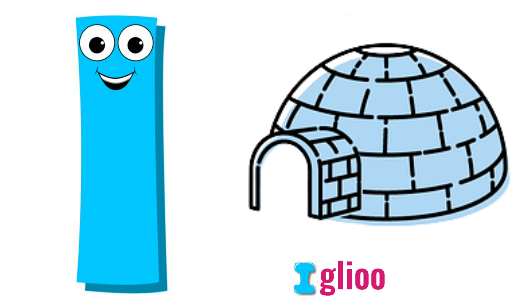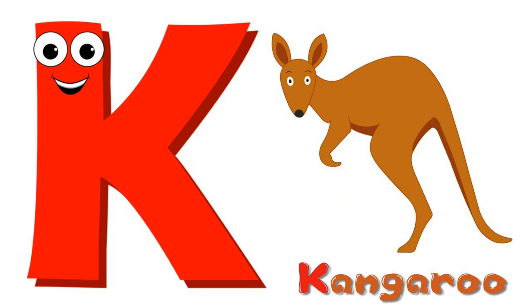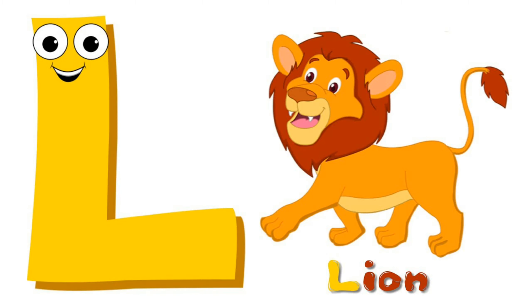I is for igloo, i-i-igloo. J is for jump, j-j-jump. K is for kangaroo, k-k-kangaroo. L is for lion, l-l-lion.